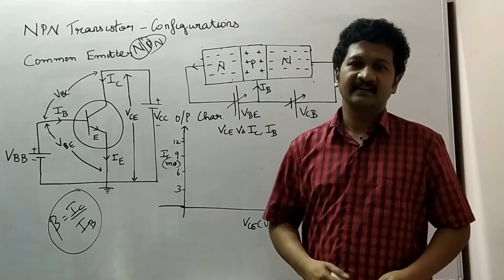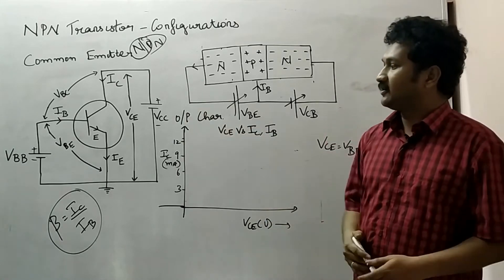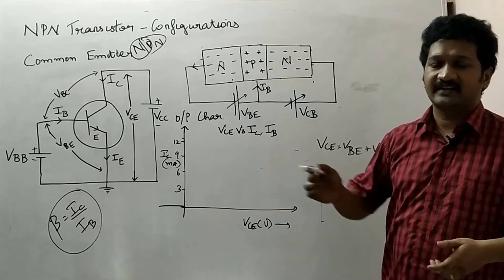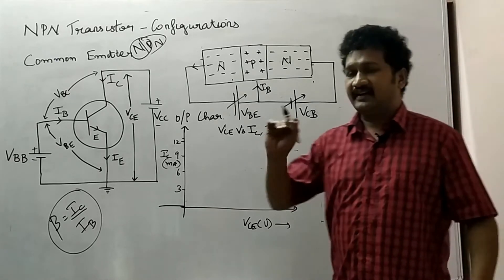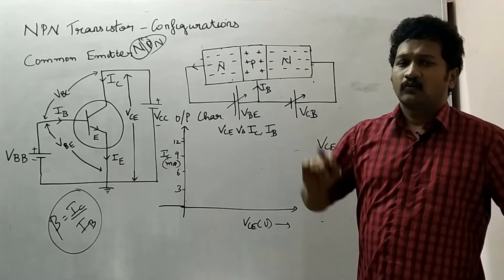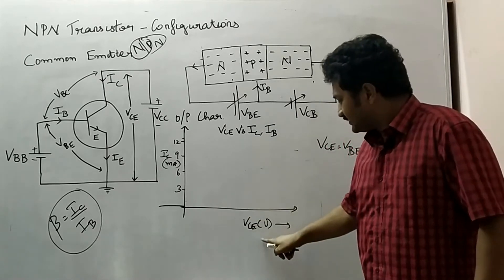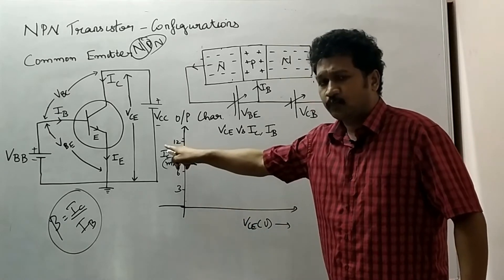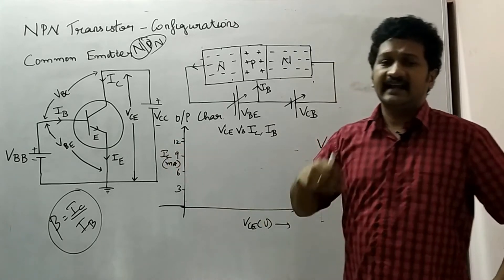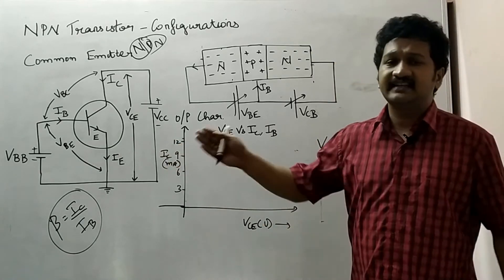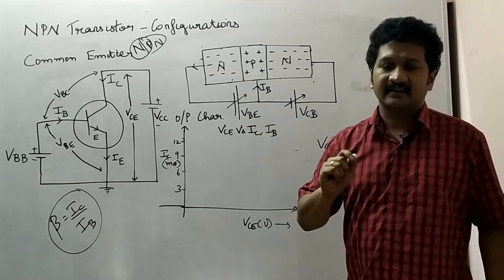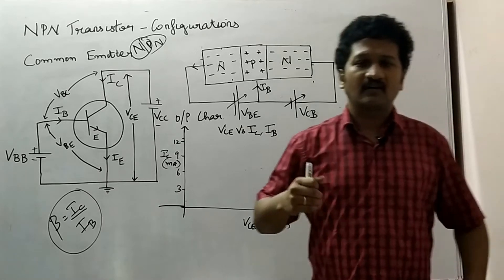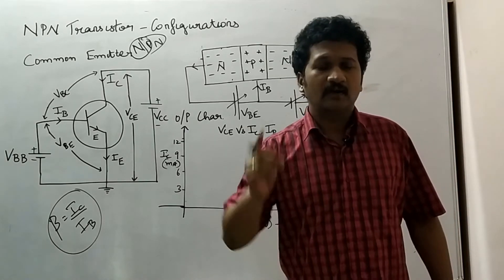Hello everyone, welcome to my channel. In this video we are going to see the output characteristics of a common emitter configuration of an NPN transistor. When it comes to output characteristics, the output parameters we have to consider are VCE, the output voltage, and IC, the output current, which is called the collector current. The objective of the NPN transistor CE configuration is to see how much current is amplified.